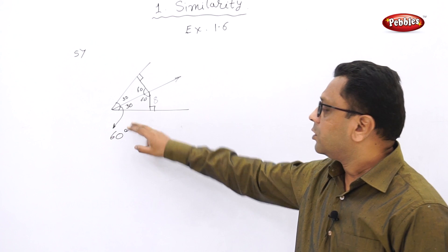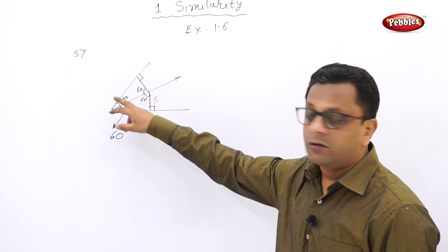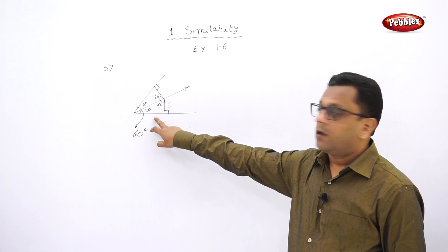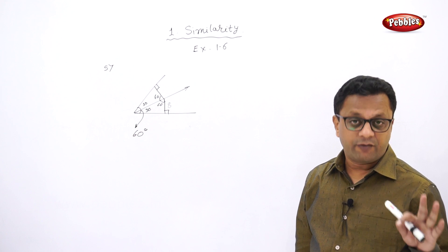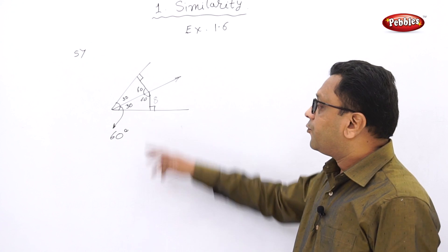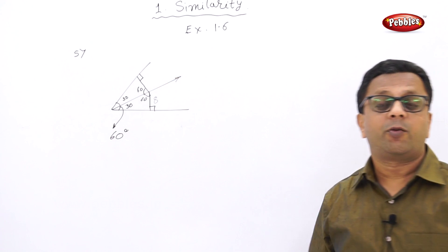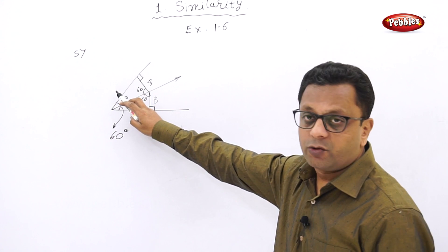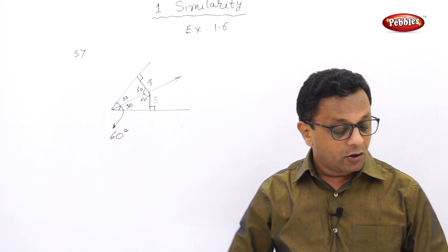So the hypotenuse is 16, and the side opposite to 60 degrees is 16 × (√3/2) = 8√3. Now one more mistake many students make: they simply assume this side equals that other side, which is nowhere given. You must first prove the two triangles congruent by the hypotenuse-side theorem, and then those sides are equal as corresponding sides of congruent triangles. Then add all four sides to find the perimeter of the quadrilateral.